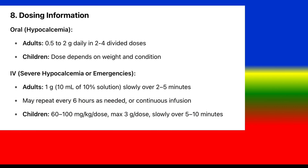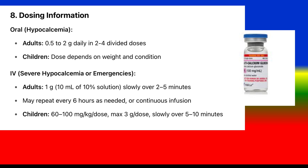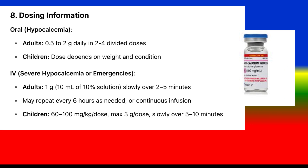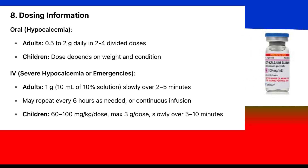Dosing information: Oral for hypocalcemia — 0.5 to 2 grams daily in 2 to 4 divided doses; children's dose depends on weight and condition. IV for severe hypocalcemia or emergencies — adults: 1 gram (10 mL of 10% solution) slowly over 2 to 5 minutes; may repeat every 6 hours as needed. Continuous infusion: 60 to 100 mg per dose, max 3 grams, slowly over 5 to 10 minutes.